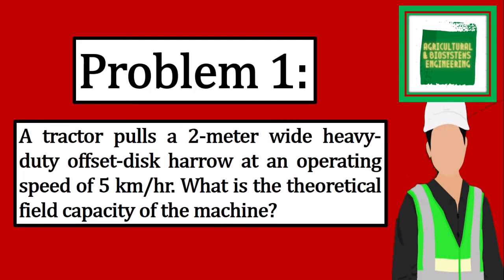Now we proceed with the first problem. A tractor pulls a 2-meter wide heavy duty offset disc harrow at an operating speed of 5 km per hour. What is the theoretical field capacity of the machine?